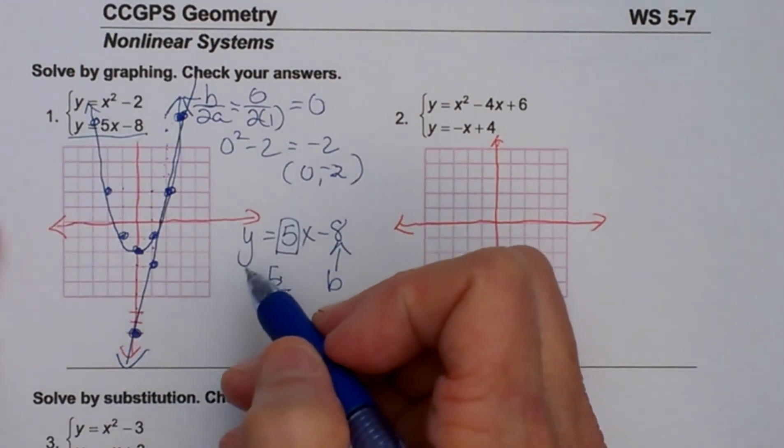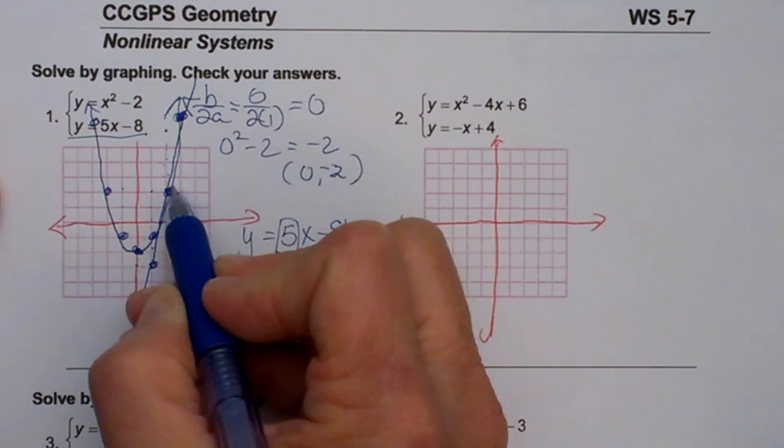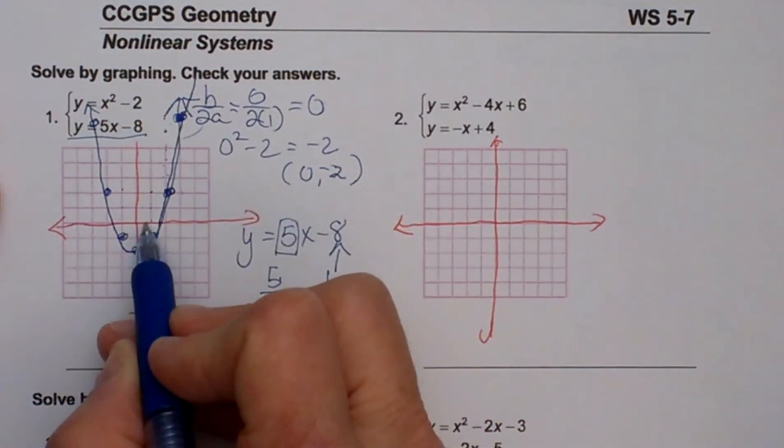Okay, so where did the line and the parabola cross? They cross at this point, and they cross at this point. So let us get those ordered pairs.